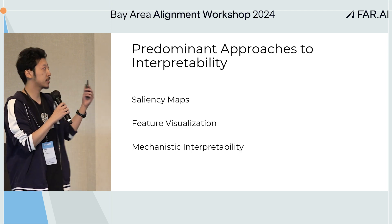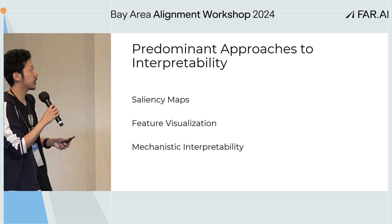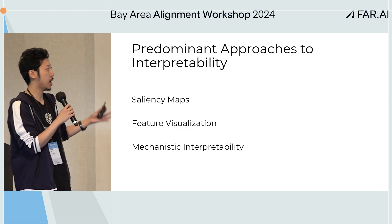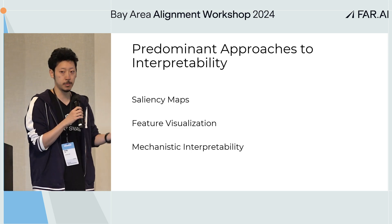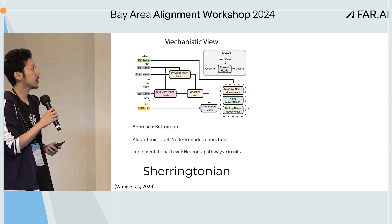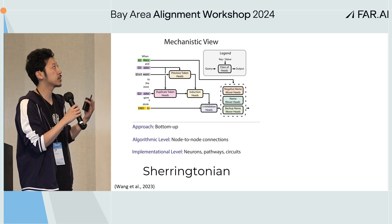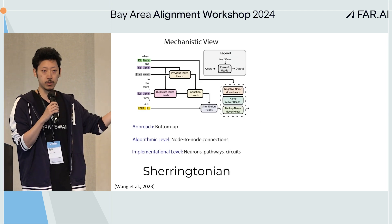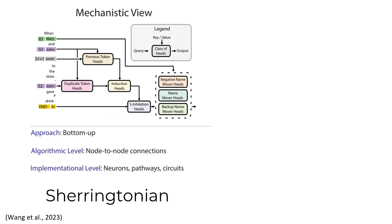There are some existing approaches including saliency maps, mechanistic interpretability, and so on. These can be characterized as the mechanistic view — the bottom-up approach — which looks at node-to-node connections based on neurons and circuits.